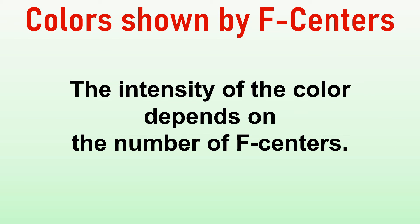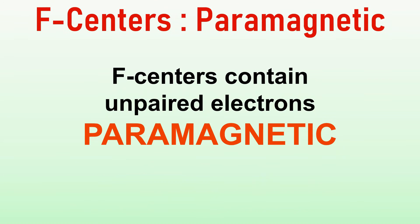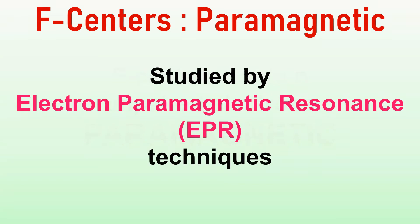The intensity of the colour depends on the number of F-centers. Since F-centers contain unpaired electrons, they are paramagnetic and can be studied by electron paramagnetic resonance, otherwise known as EPR techniques.